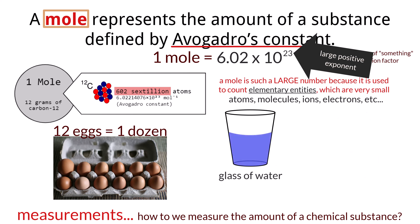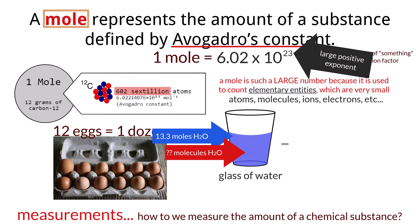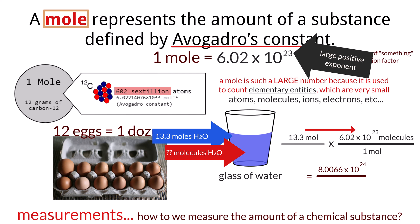Let's say you had a glass of water that contained 13.3 moles of water. How many actual water molecules would you find in that glass? Using our conversion factor, we start with 13.3 moles of water and multiply by our conversion factor — 1 mole equals 6.02 times 10 to the 23rd molecules. Multiplying across, 13.3 times 6.02 times 10 to the 23rd equals about 8.0066 times 10 to the 24th. The denominator is 1, the mole units cancel out, so 13.3 moles of water has around 8 septillion molecules within it. As that is such a large number, you can see how it is easier to measure and talk about it in terms of moles.